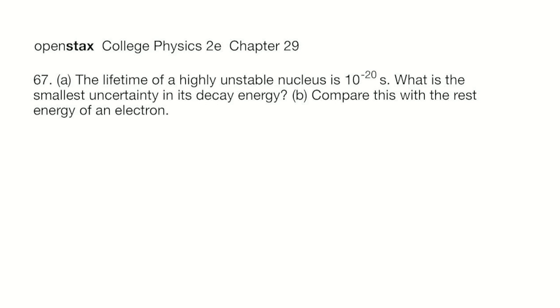In this problem, we have the lifetime, so we have the delta T for a highly unstable nucleus, and we need to find the smallest uncertainty in its decay energy and compare that with the rest energy of an electron. So let's write down what we know, and that is delta T is 10 to the minus 20 seconds.